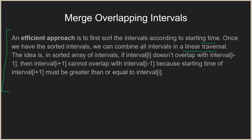The key idea is: in a sorted array of intervals, if interval i doesn't overlap with interval i-1, then interval i+1 cannot overlap with interval i-1 either, because the starting point of interval i+1 must be greater than or equal to interval i. We exploit this fact in our algorithm.